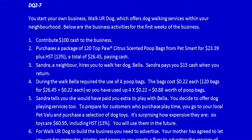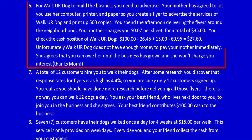We're continuing with demonstration question 2-7, on transaction number six. For Walk Your Dog, to build the business you need to advertise. Your mother has agreed to let you use her computer, printer, and paper, so you create a flyer to advertise the services of Walk Your Dog and print up 500 copies. You spend the afternoon delivering the flyers around the neighborhood, and your mother charges you 7 cents per sheet for a total of $35.